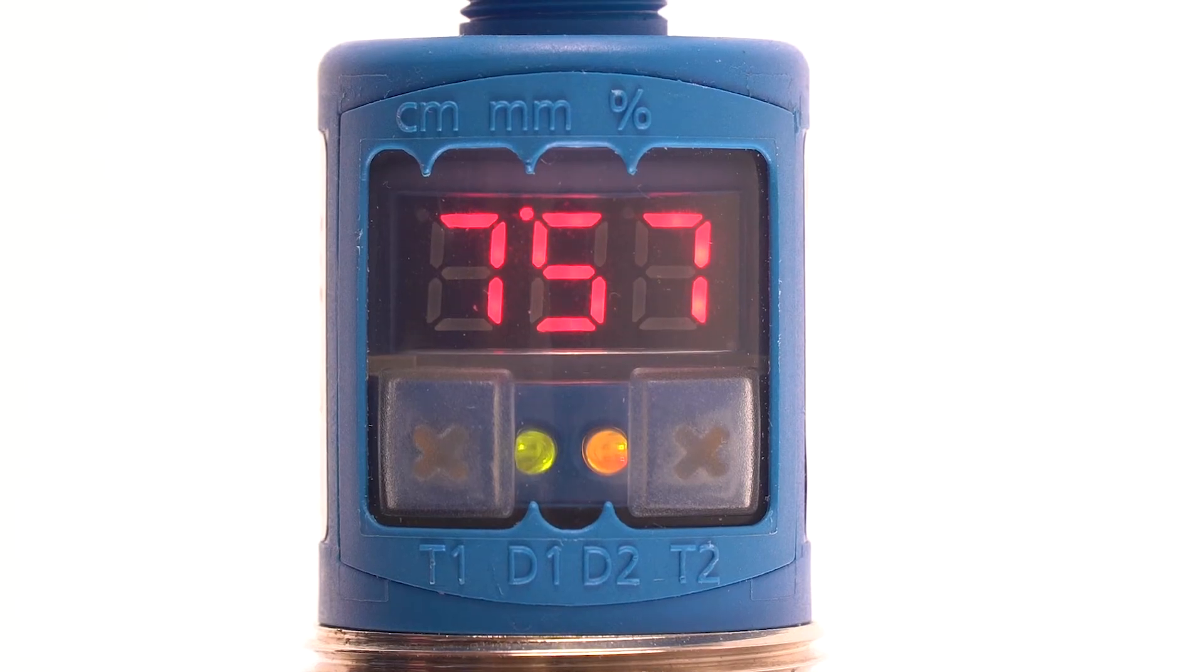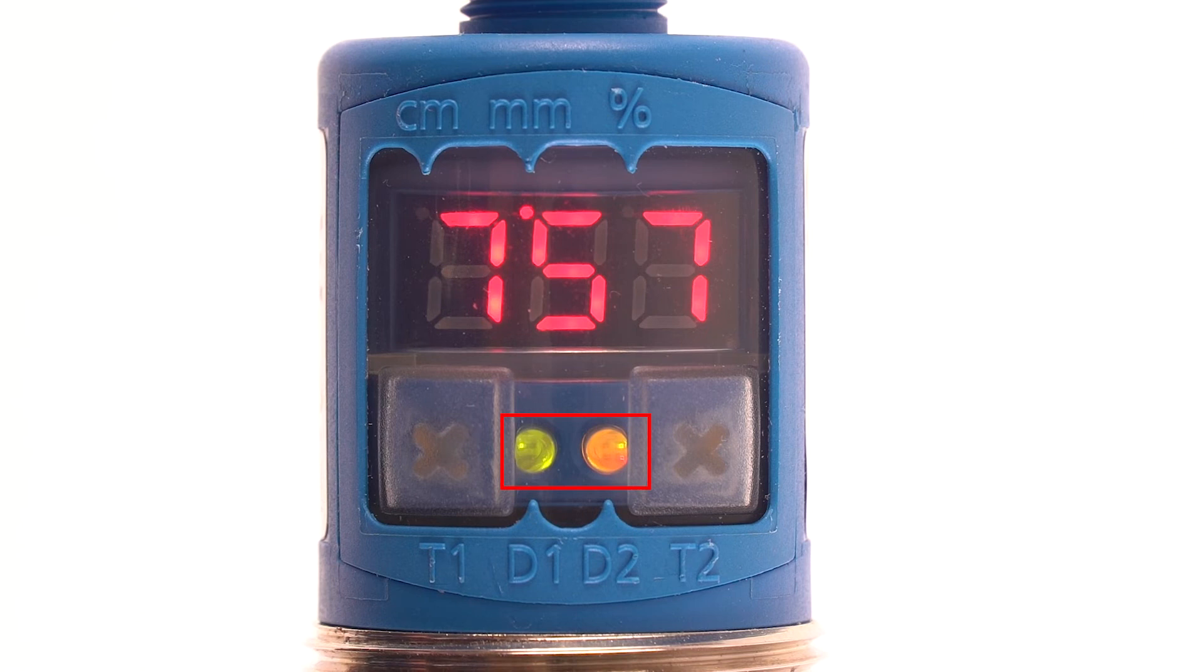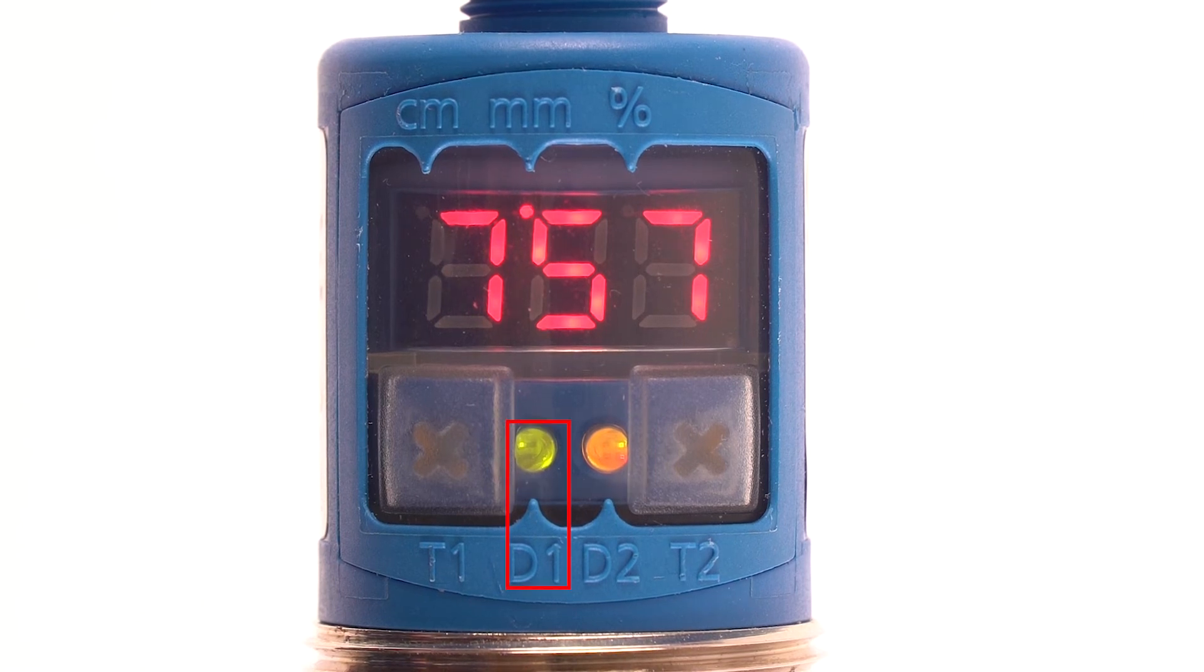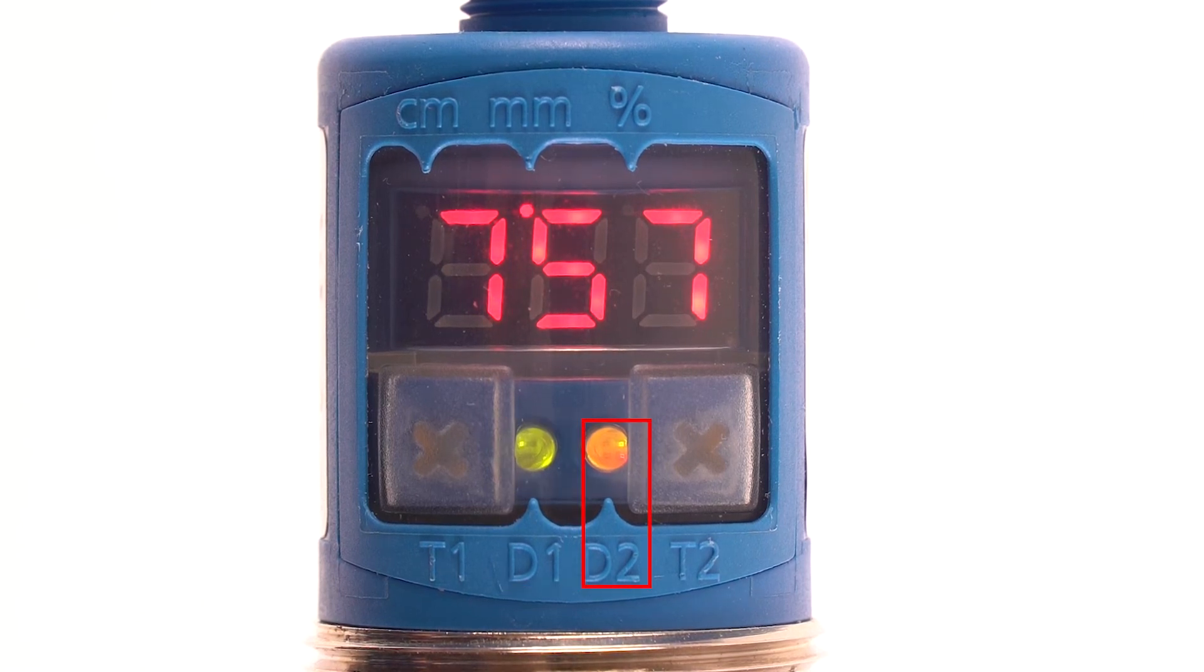The two multicolored LEDs indicate the status of the outputs. D1 for the analog and D2 for the switching output.